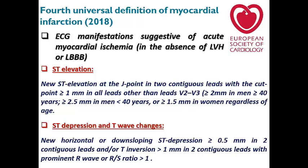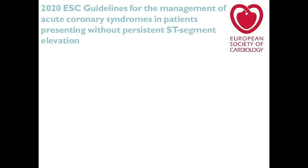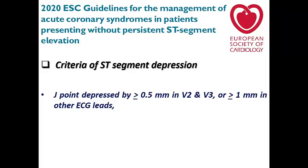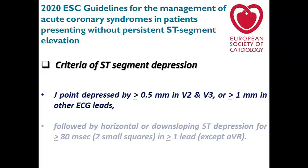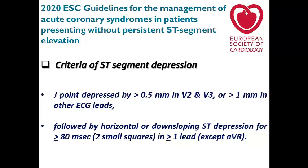In the 2020 ESC guidelines, criteria for ST-segment depression include: J point depressed by ≥0.5 mm in V2 and V3, or >1 mm in other ECG leads, followed by horizontal or down-sloping ST depression for more than 80 ms — two small squares — in one or more lead except AVR. These cut points apply in clinical practice, but if a patient has a convincing clinical presentation of myocardial ischemia even without fulfilling all criteria, admit the patient and follow up with serial ECG.